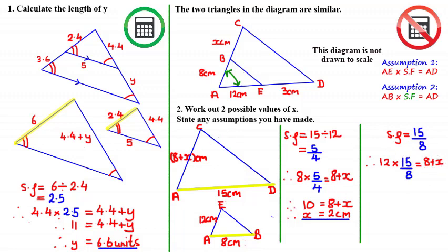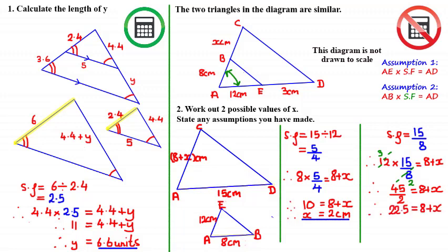So 12, the length of AE, multiplied by the scale factor of 15 over 8 equals 8 plus X, the length of AC. Simplifying the left-hand side by taking out a common factor of 4 gives 3 multiplied by 15 over 2. So 3 times 15 is 45, divided by 2 gives us 45 over 2. Therefore 45 over 2 equals 8 plus X. Since 45 over 2 is 22.5, we have 22.5 equals 8 plus X, and subtracting 8 from both sides gives X equals 14.5 centimeters.